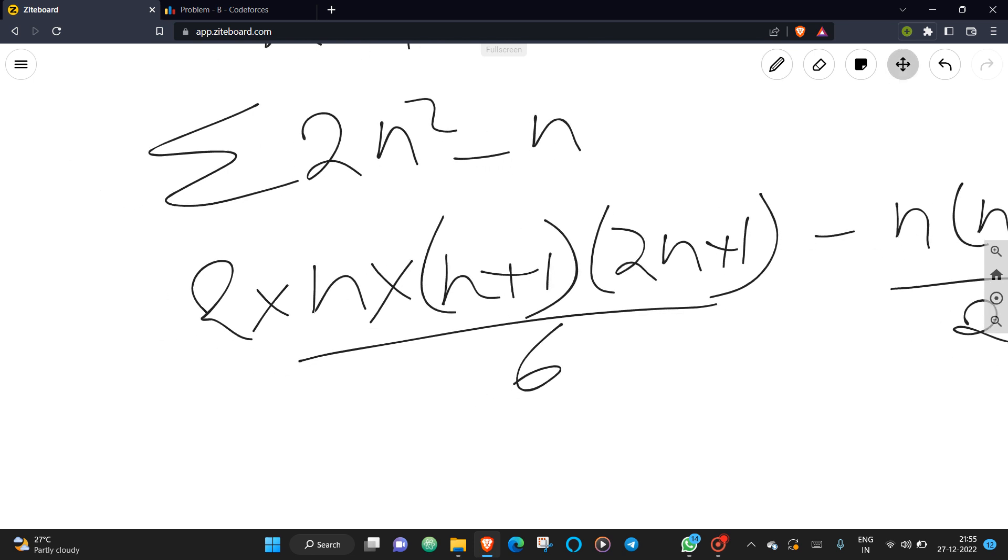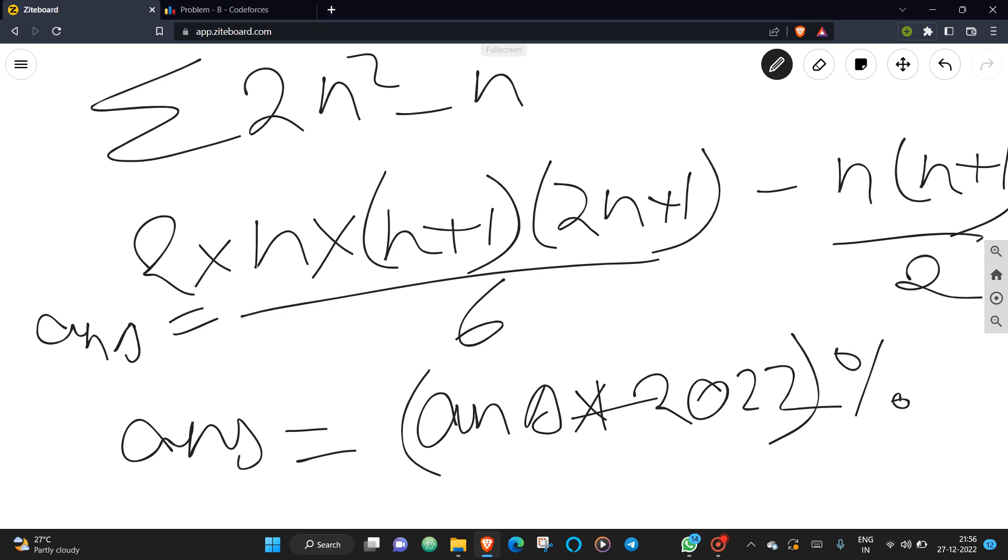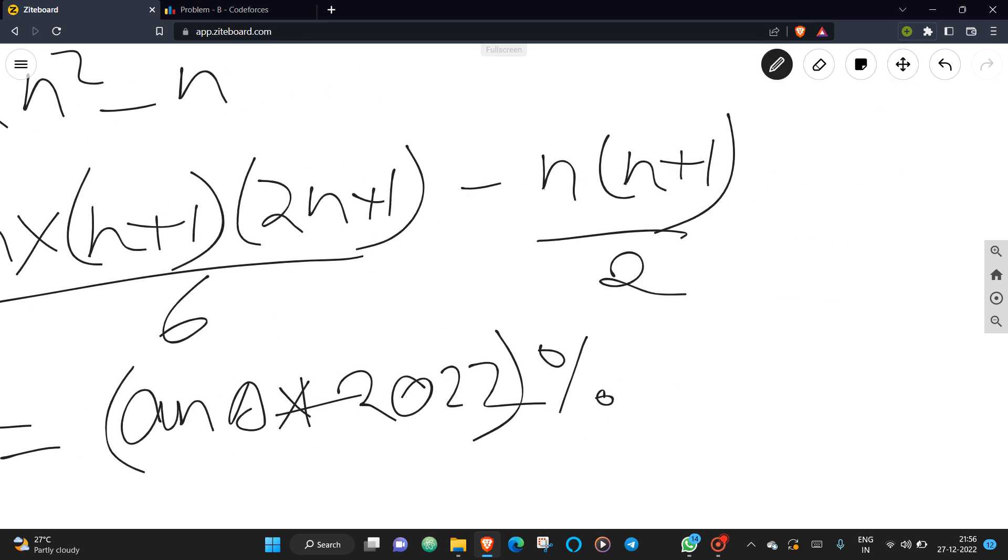This will be your answer. Now, you need to multiply your answer with 2022 and take the modulo with 10^9 + 7.